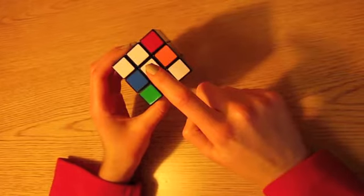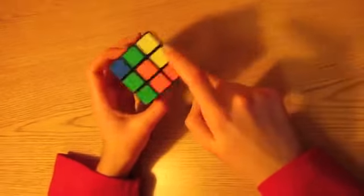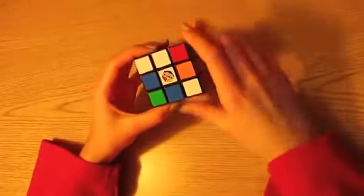The center square never moves. For this reason, it forms the basis of what color each face should be. We define this as c sub x, where x is the color of the center square. To start off, we chose the white face as the top face.